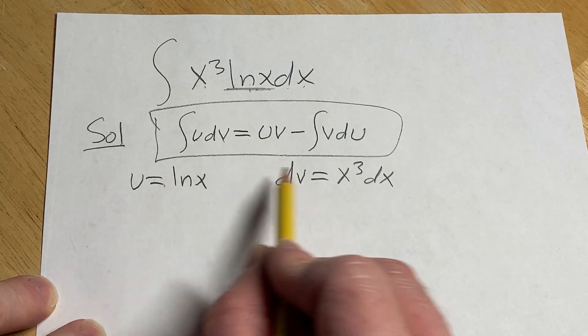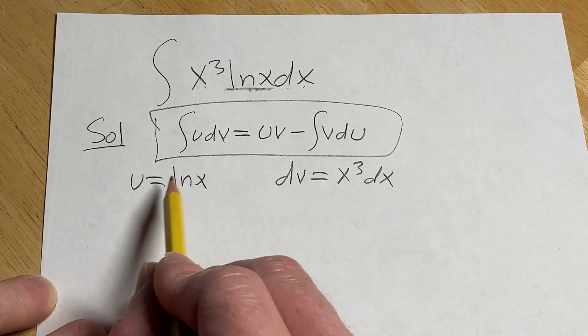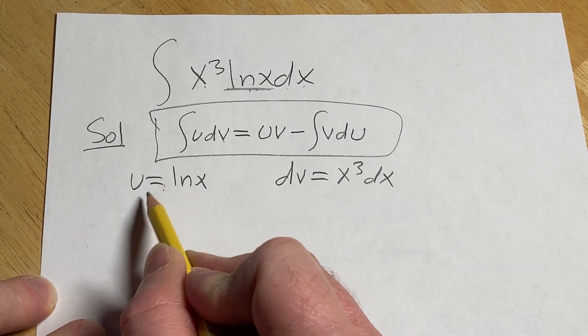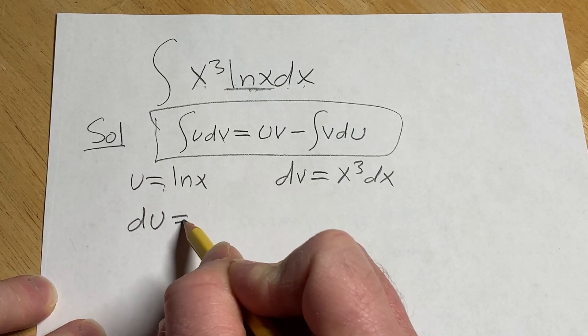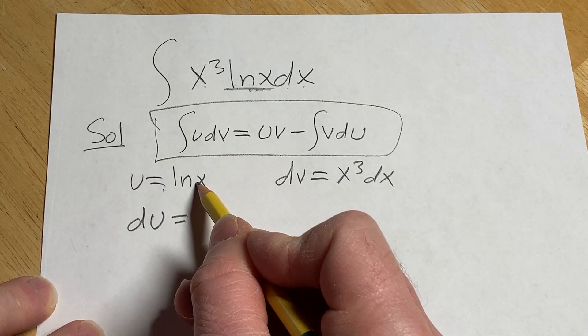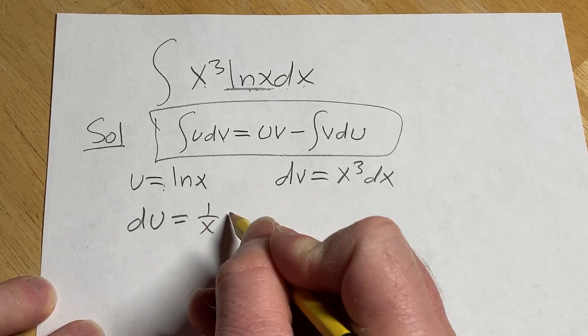All right we've identified u and dv so now we just have to compute du and v. So du is the derivative of u and differentiating the natural log of x that's going to give us 1 over x dx.